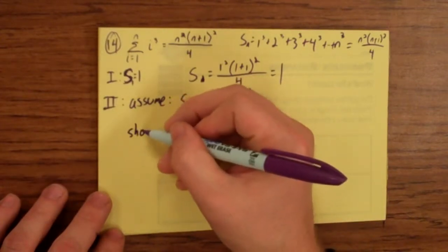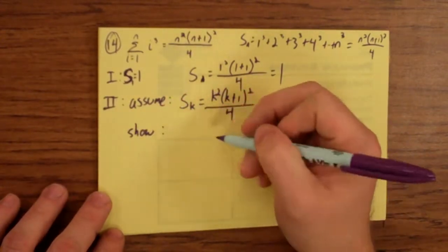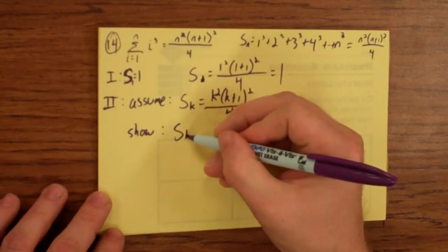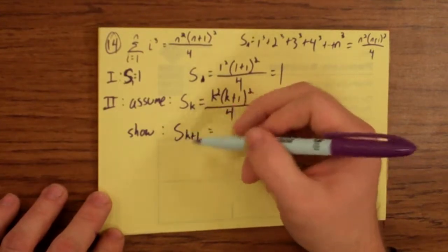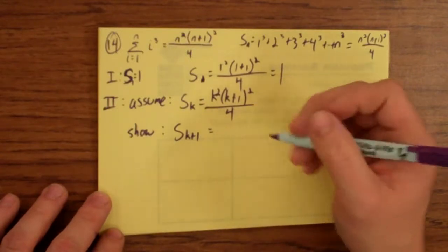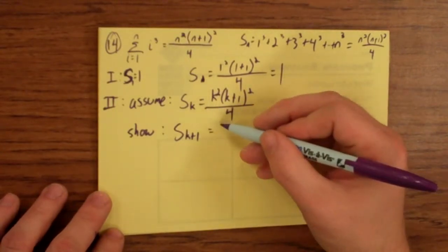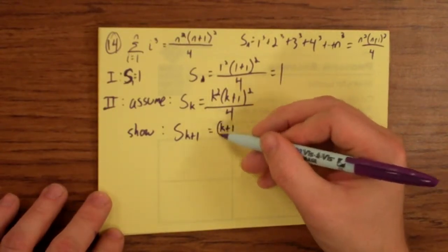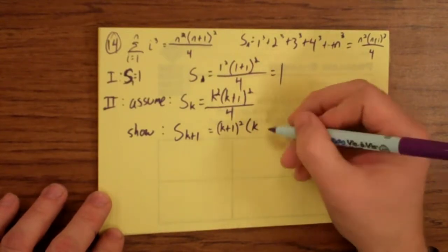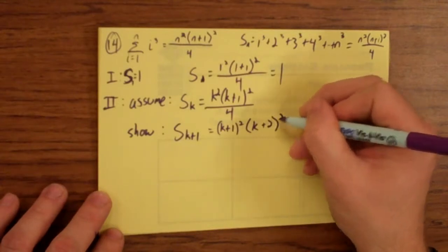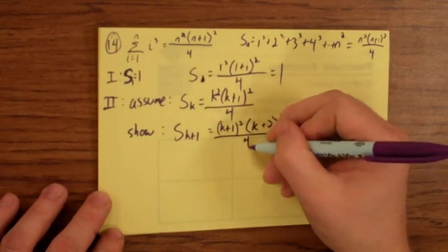Next, I'm going to show that this formula will also work if I want to add on the next term, the next cube number. So here, this is going to be k plus 1 squared times, if I put a k plus 1 in here and I add 1 to it, I get k plus 2.